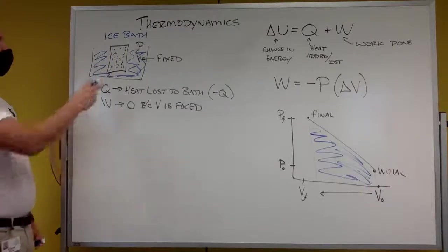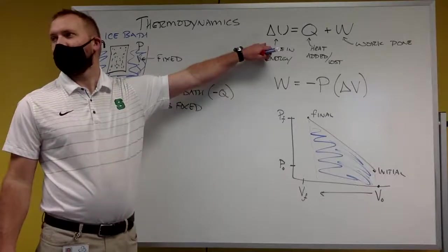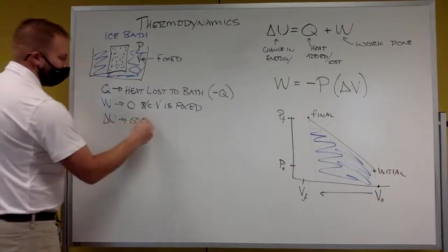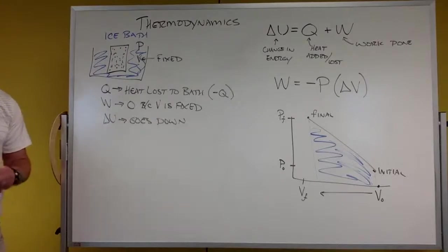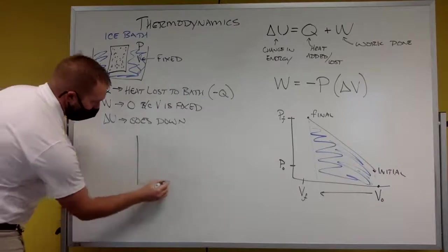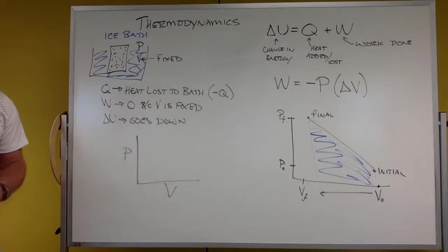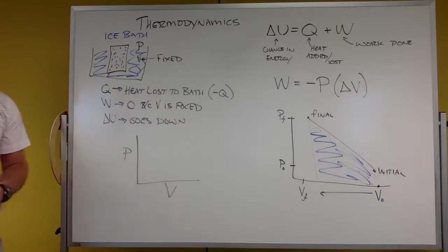What happens to my internal energy? It goes down. My internal energy goes down because temperature goes down. Let's draw what a pressure versus volume graph would look like for that. Volume is constant.